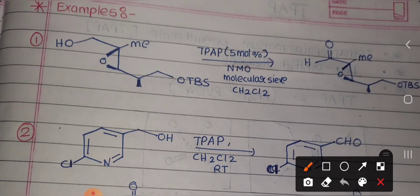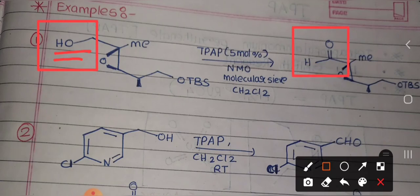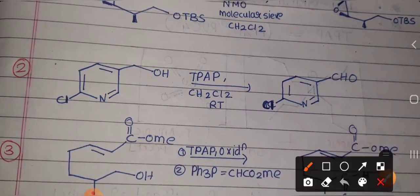Now let us look at some examples. In the first example, a primary alcohol is given. As we already know, the TPAP reagent is an oxidizing reagent — it will convert the primary alcohol to aldehyde. Other functional groups will remain intact; there is no role of this reagent on an epoxide or anything else. The product is simply the aldehyde — it is quite a simple reaction.